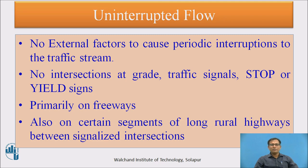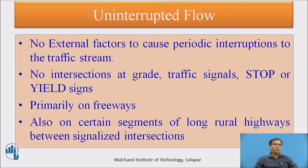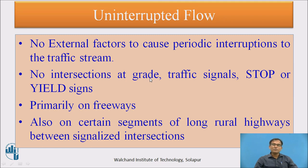In uninterrupted flow, there are no external interruptions for the driver. However, this does not mean the driver can go at very high speed. During high volume conditions, the flow might decrease because of the higher volume — when capacity decreases, speed decreases. But this speed reduction is not due to external factors; it is caused mainly by interruptions within the traffic stream itself due to high traffic volume.